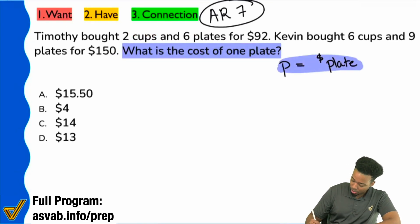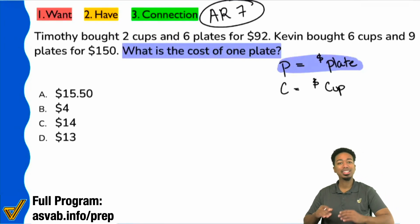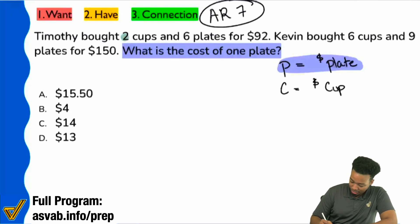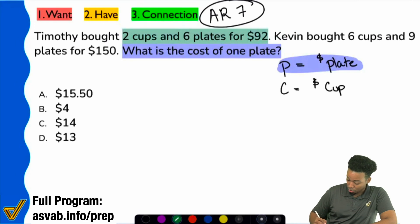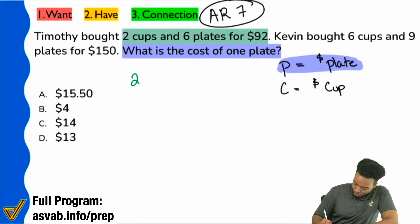So I'm going to note to myself that, yeah, I'm looking for the plate, but I'm also going to know that C represents the cost of a cup. So again, these are the ingredients to let you know that you're dealing with a system of equations because you're dealing with two unknowns and you're also dealing with two relationships that use the unknowns. Here's what I mean by that. In green, I'll go ahead and highlight this right here. Two cups and six plates for $92. That'll be right here, 2C + 6P = $92.